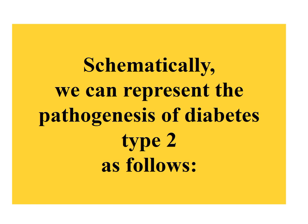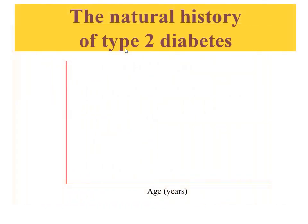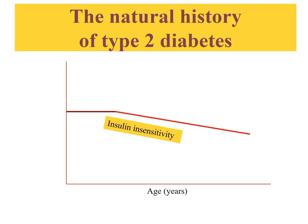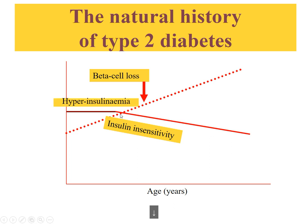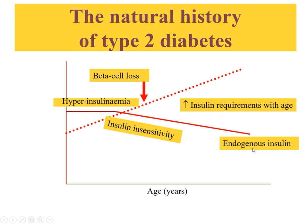Schematically, in type 2 diabetes, insulin sensitivity decreases slowly, and increasing hyperinsulinemia becomes necessary to keep blood glucose in the normal range. Over time, endogenous insulin production decreases, insulin requirement increases with age, and ultimately secondary failure of beta cells develops, leading to hyperglycemia.